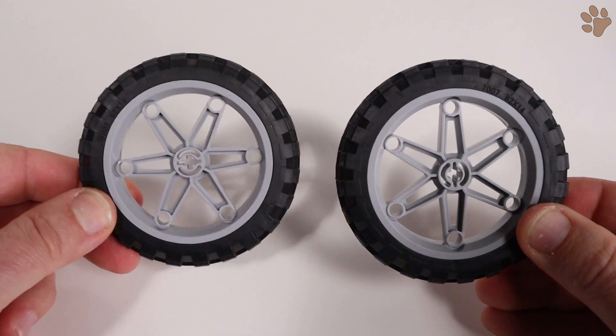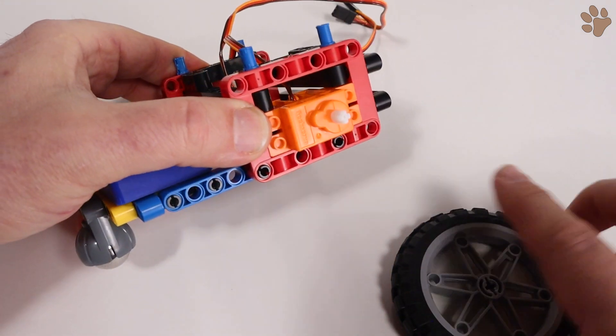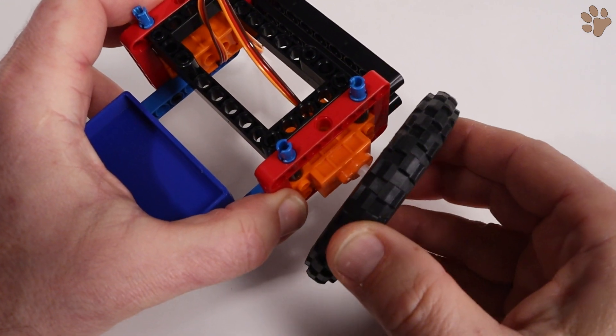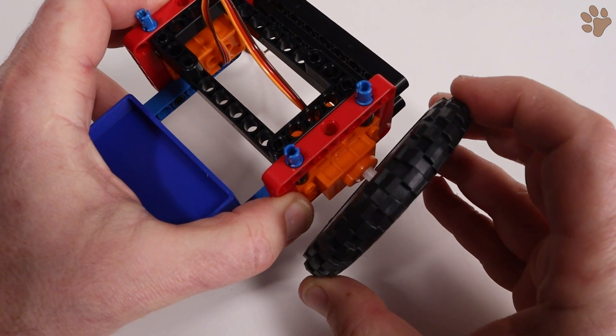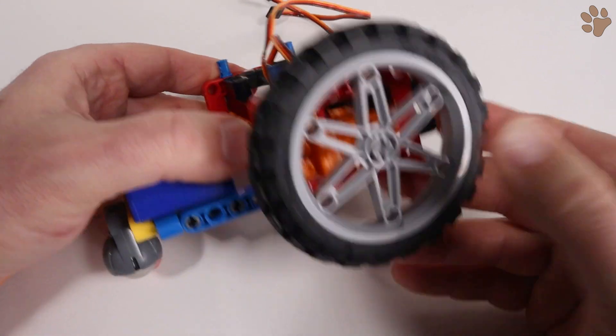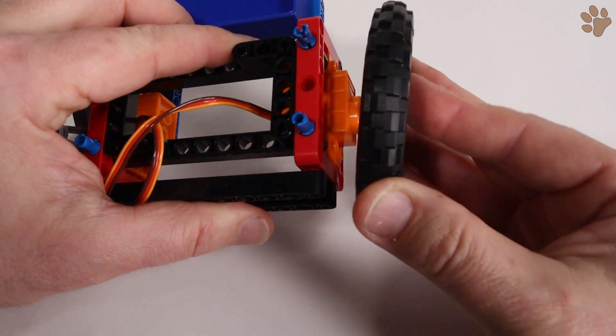Then do the same with the second wheel. Now place the wheel onto the servo. Simply line up the plus on the rim with the servo shaft and press it in place. Then repeat with the other wheel and servo.